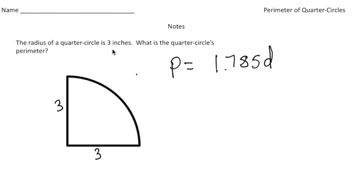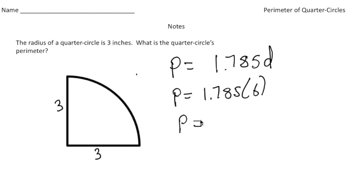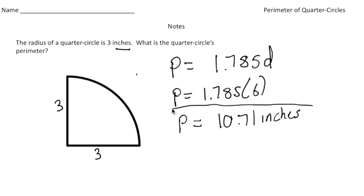Because the radius is three, I know the diameter is six, since the diameter is twice the radius. So I replace d with six: perimeter equals 1.785 times six. When I calculate that, I get 10.71 inches. It's important to use the right label — so the answer is 10.71 inches. Notice how easy it is to get the perimeter once you use this formula.